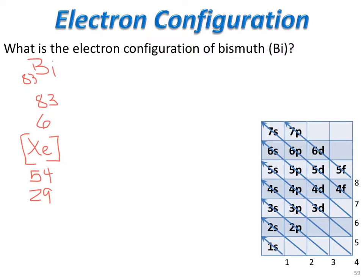Xenon being at the end of the 5th period, and bismuth in the 6th period, we start with the 6s. We put 2 electrons in the 6s, leaving 27 electrons. Following the next diagonal, we come to the 4f. The f subshell can hold 14 total electrons, and since we have more than 14, we put 14 electrons in the 4f.